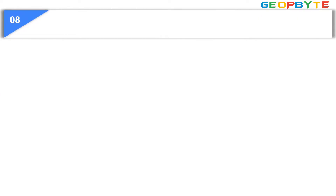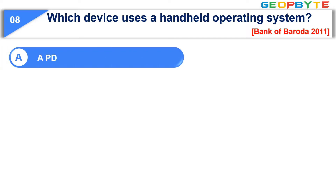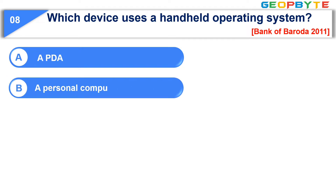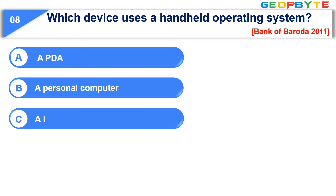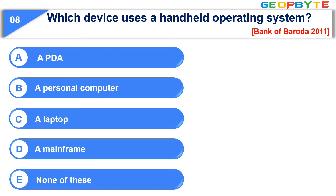Moving to question number eight. Which device uses a handheld operating system? Option A: A PDA. Option B: A personal computer. Option C: A laptop. Option D: A mainframe. Option E: None of these. The correct answer is option A, a PDA.